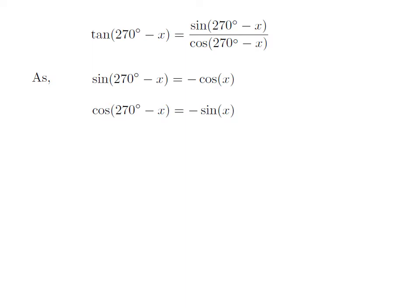We also know the trigonometric identity: cosine of 270 degrees minus x is equal to minus sine of x. The proof of this identity has been explained in the video appearing in the upper right corner, and the URL has been mentioned in the description section as well.